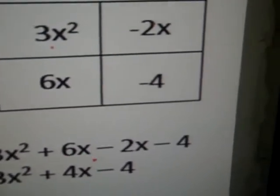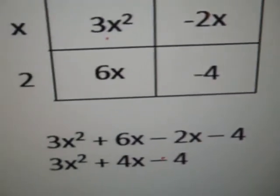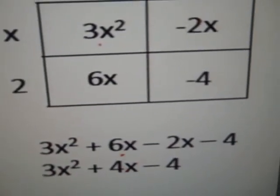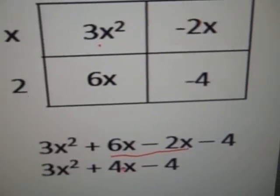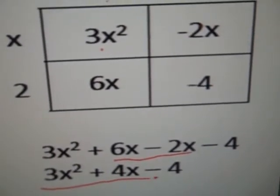3x squared, plus 6x, minus 2x, minus 4. And then simplify by combining these like terms. 6x minus 2x, 4x. Final answer right here.